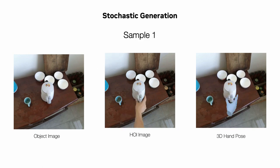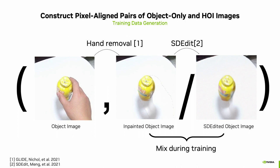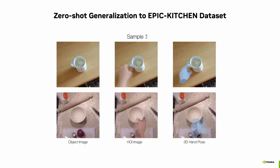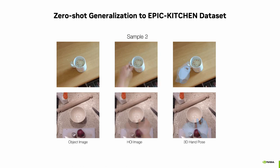It is a stochastic approach and can generate diverse finger articulation and spatial relations. To train such a model, we use pairs of object-only and hand-object images. We construct such pairs by inpainting techniques and propose a data augmentation to prevent overfitting to inpainting artifacts. We find the model generalizes well to normal objects with normal backgrounds.